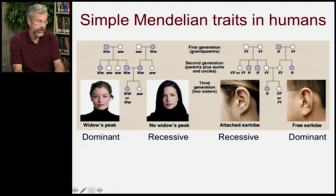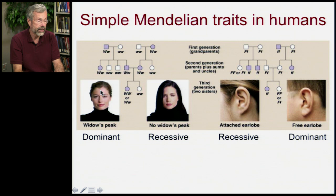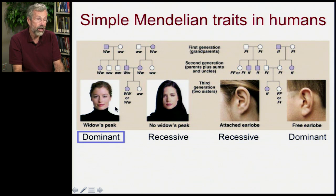In humans, there are a number of single traits that likewise behave in a Mendelian manner, even so far as to have complete dominance. Here's just a couple. First is whether you have a widow's peak. If you move back the front of your hair on your forehead, some people have a V-shaped patch — that's a widow's peak. Some people don't have it. Now if we look at this particular family, we're going to follow the pedigree of a particular trait that's dominant.